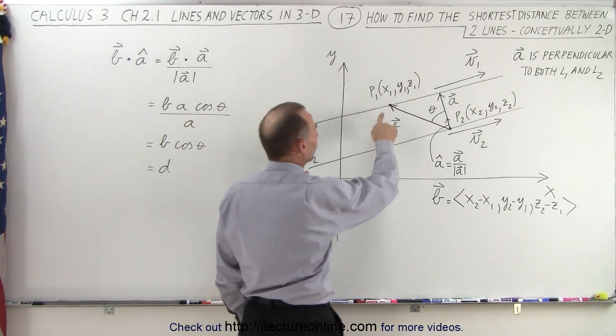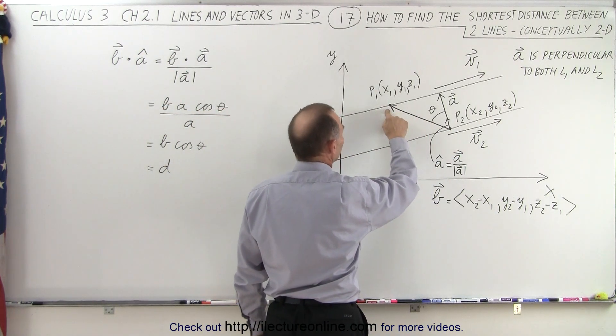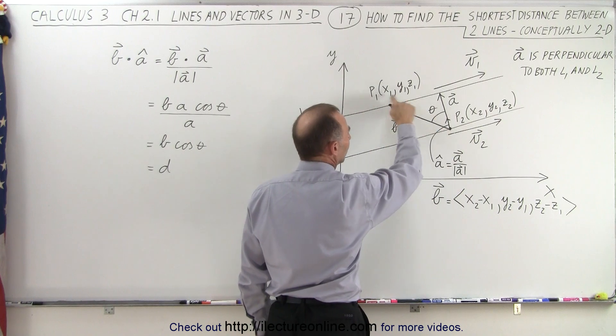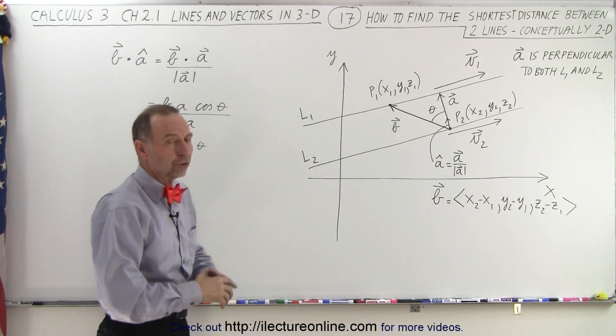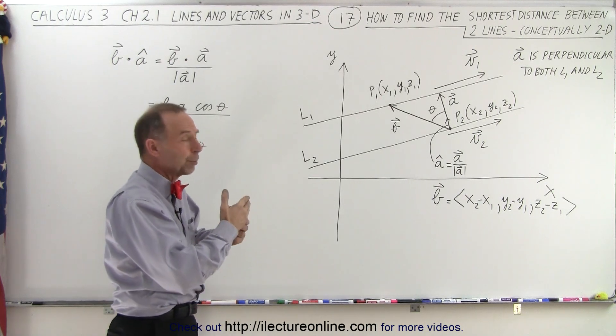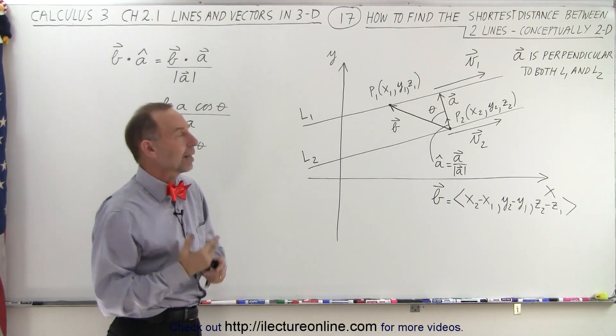Let's also pick two points, point 1 and point 2, point 1 on line 1, point 2 on line 2, with the coordinates of those two points. So there's two things that we need. First of all, we need a vector that's perpendicular to both lines,